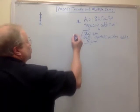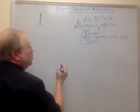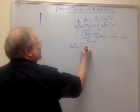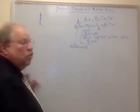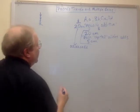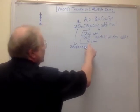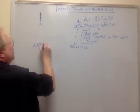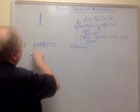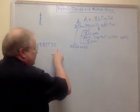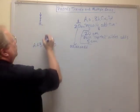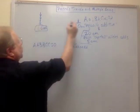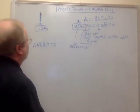That means our shortest plant is going to be only 20 centimeters tall, and it will have the genotype: little a, little a, little b, little b, little c, little c, little d, little d — no capital letters, just the base height. Our tallest plant will be big A, big A, big B, big B, big C, big C, big D, big D. We have 8 capital letters, and 8 times 5 is 40, so this plant is going to be 40 plus 20 — 60 centimeters tall. So our shortest plant is 20 centimeters and our tallest is 60 centimeters.